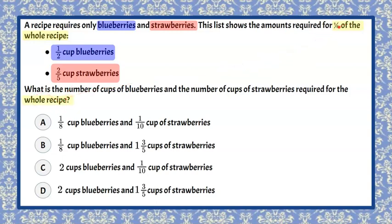So one-fourth is this. So let's make what you could call a table or a tape diagram. And I have two ingredients. I have blueberries, and I have strawberries, and this represents one-fourth.